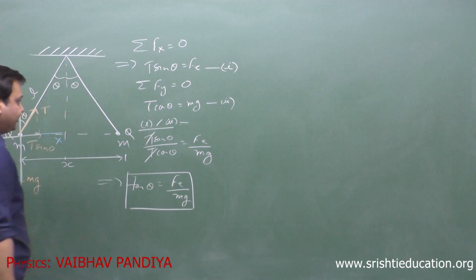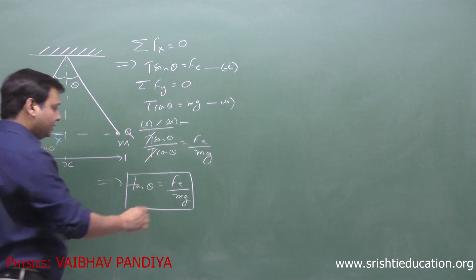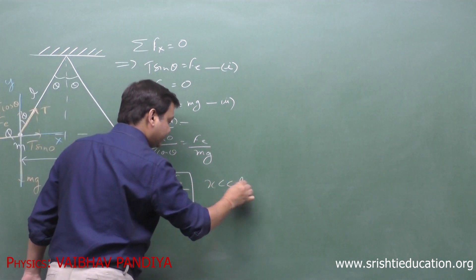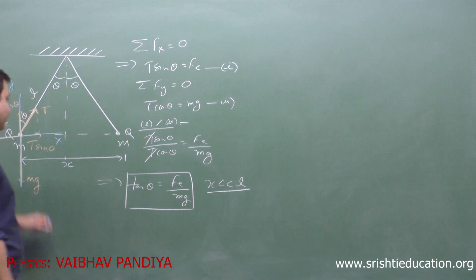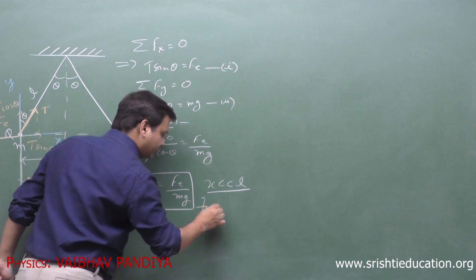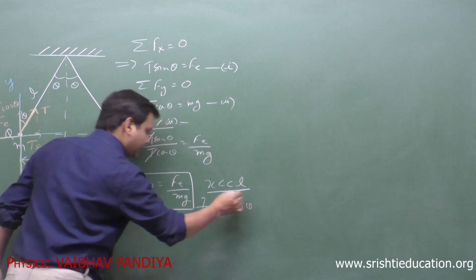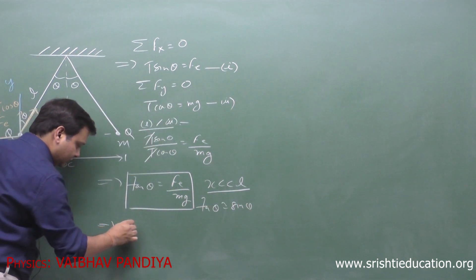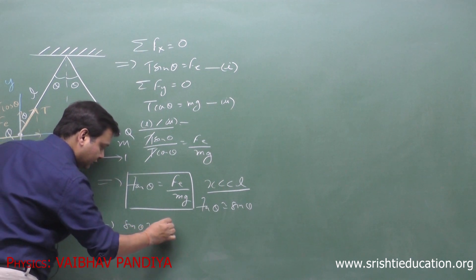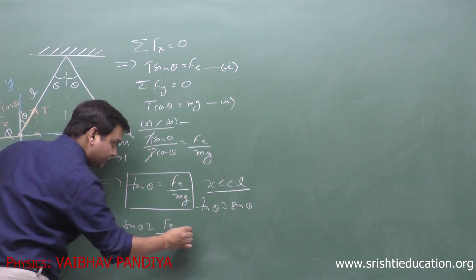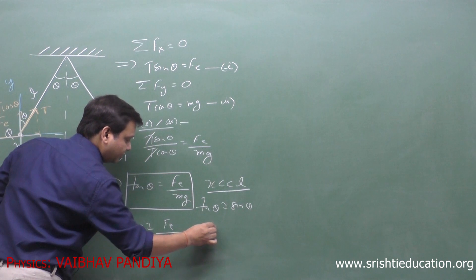Now, as it is given in the problem that X is much much less than L, the angle theta will be very small and tan theta can be approximated with sin theta. So I will have sin theta equals Fe by Mg. This is equation number 3.